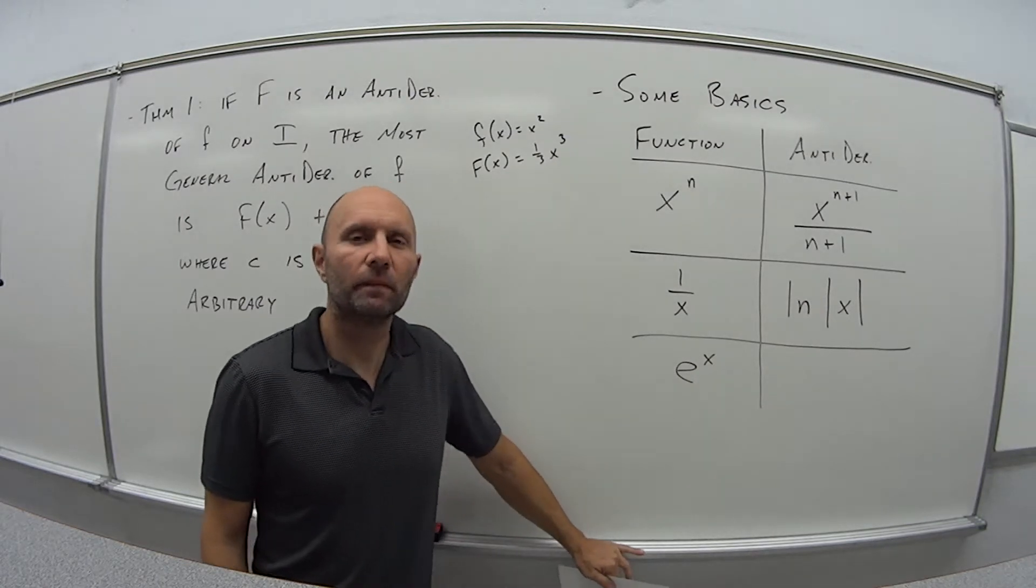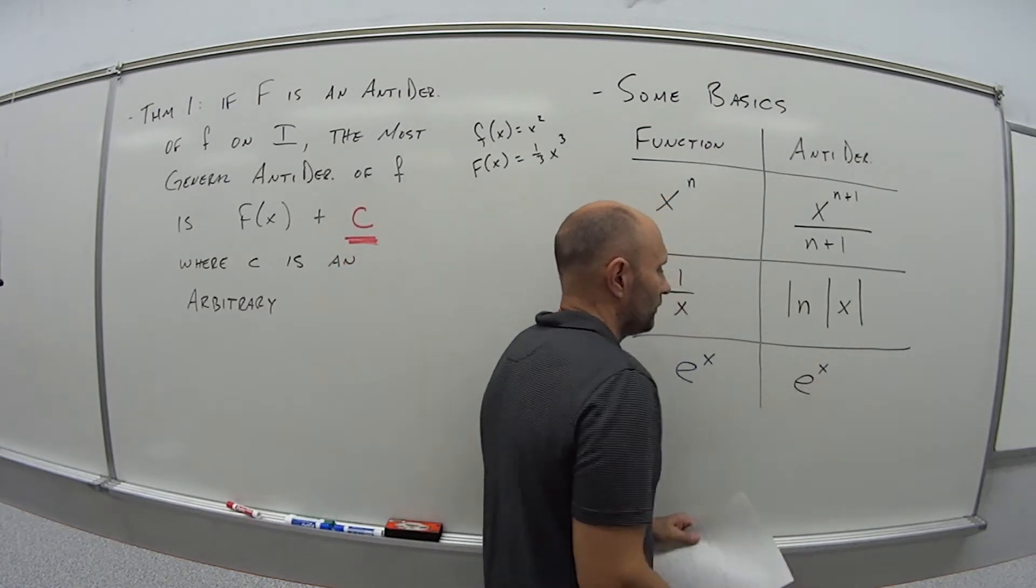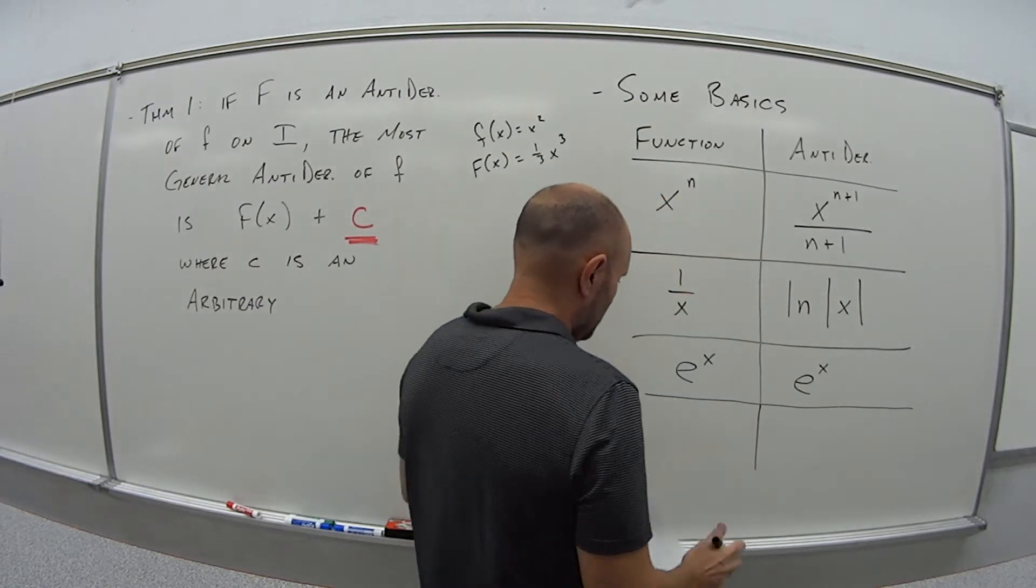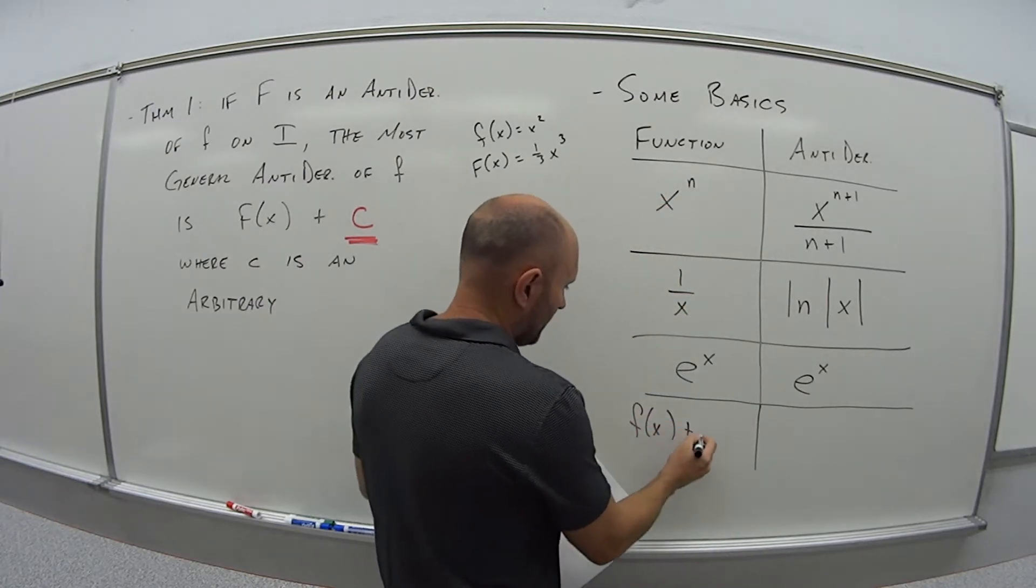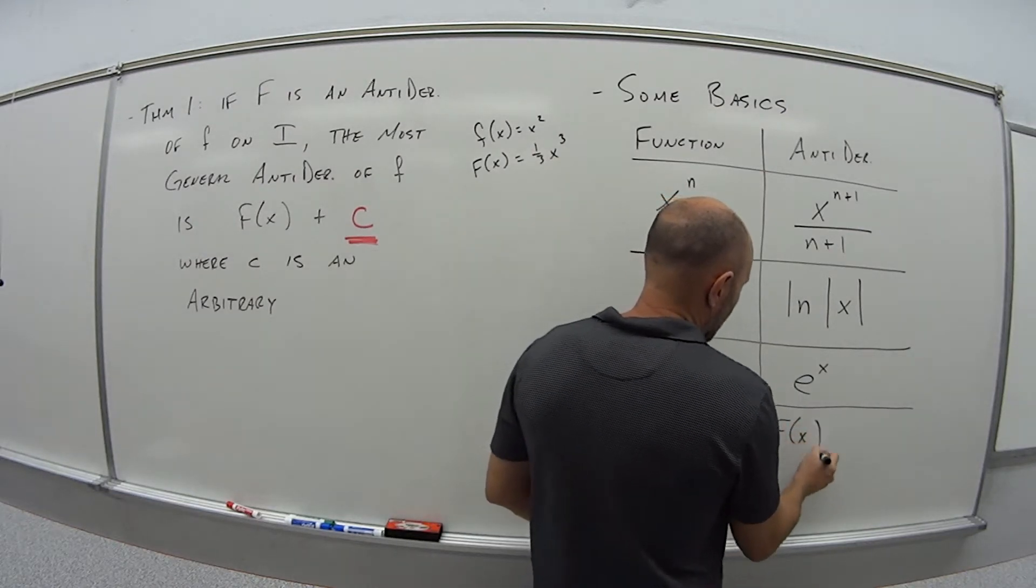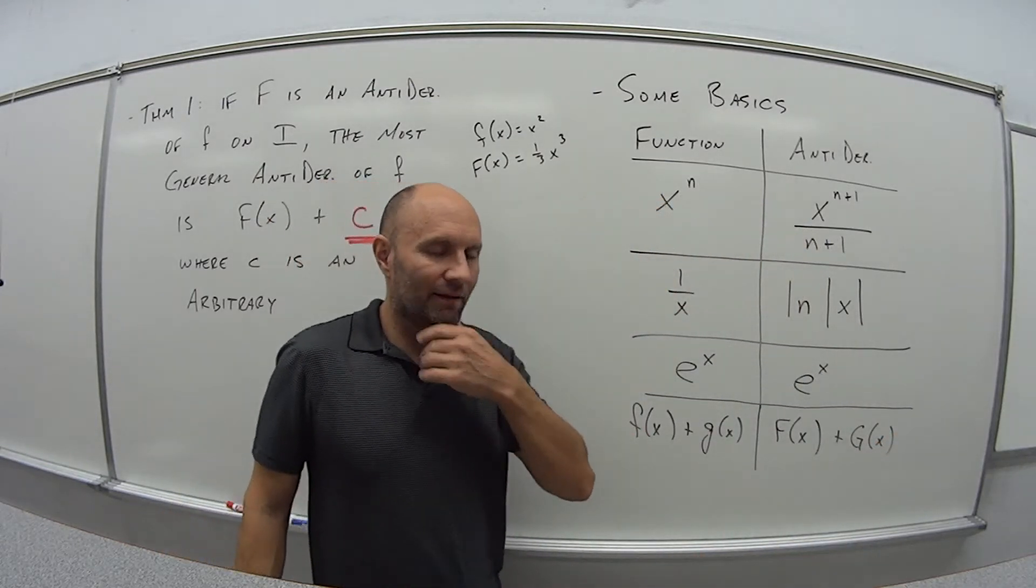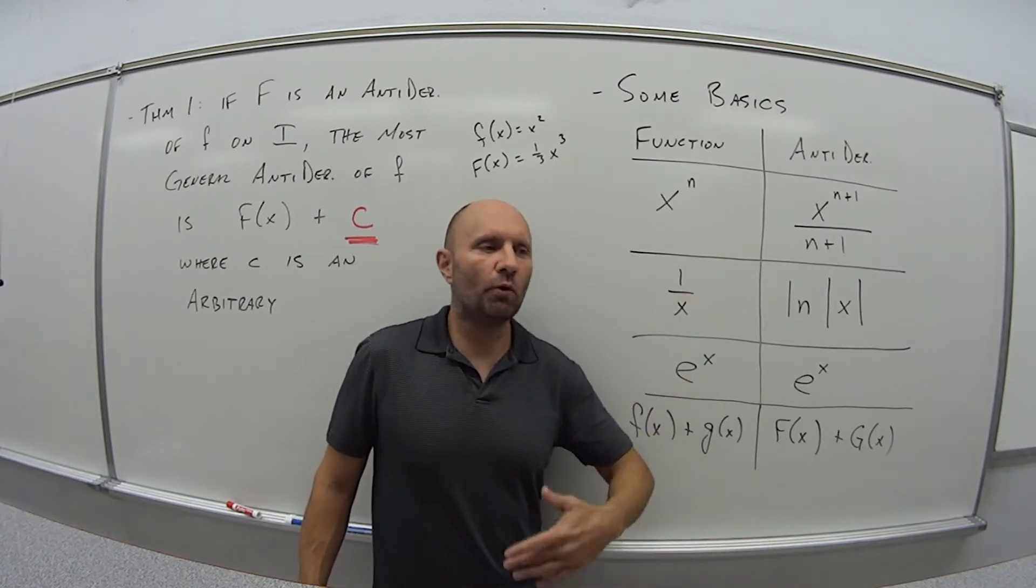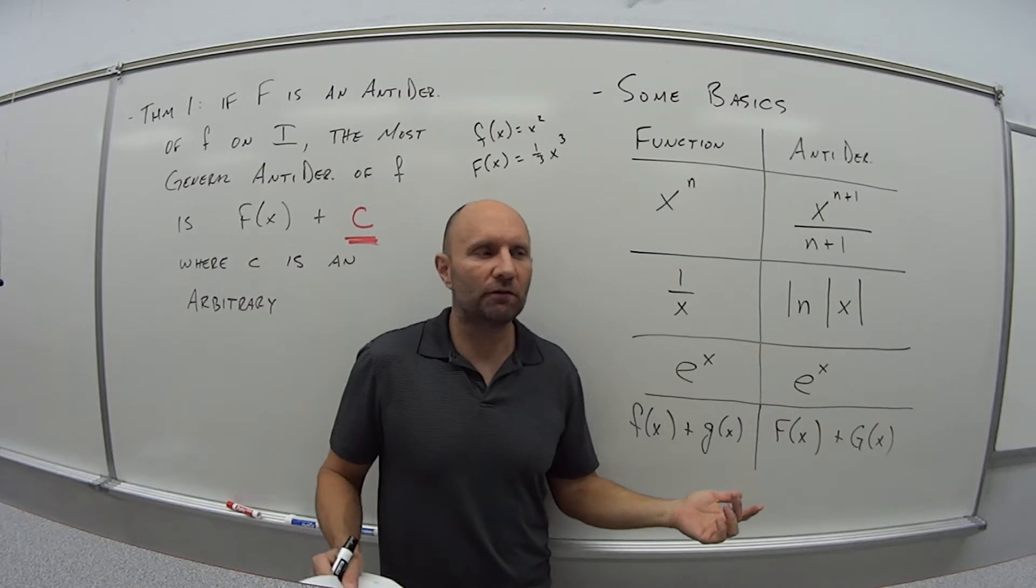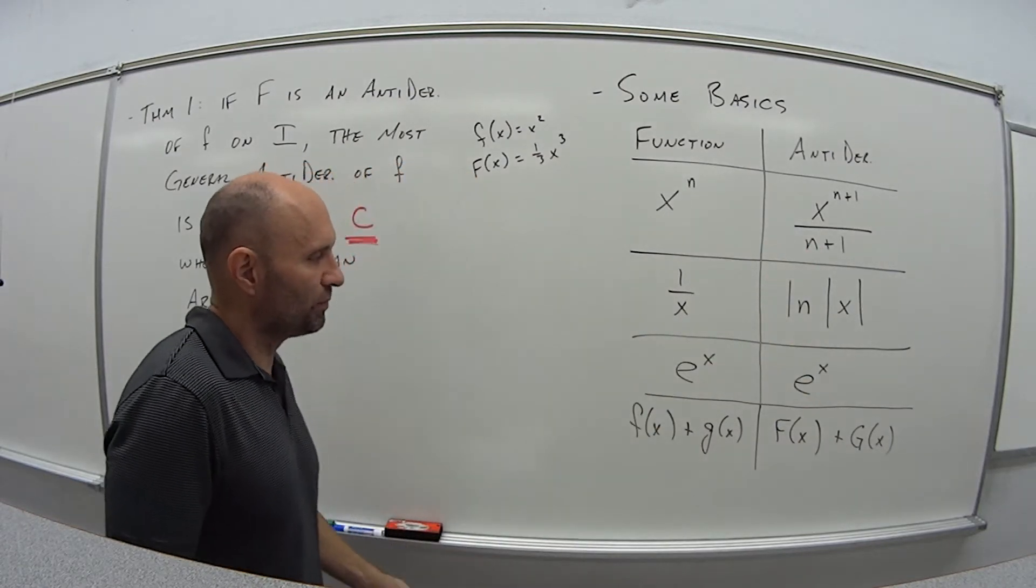What about e to the x? So what function did I have that if I took the derivative, I got e to the x? Well, it's the same thing, right? So if I have e to the x, I take the derivative, I get e to the x. And then if I have some function f of x and some function g of x, this anti-derivative is going to be capital F of x plus capital G of x. Point being here that, let's say I have a polynomial, x to the 4th plus x to the 3rd plus 2, or minus 2, doesn't matter, plus or minus. All I'm going to be doing is taking the anti-derivative of each piece and then adding them up at the end. And that gives me the anti-derivative.